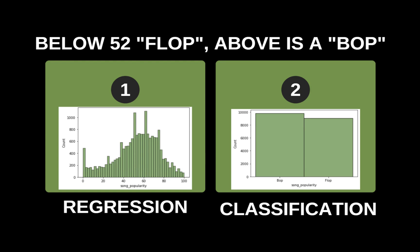So I decided to reframe the problem in a way that addresses the business problem and still provides value. Songs with a score of 52 and above are classified as a success, and lower scores were flops. 52 was strategically chosen because it gave a 50-50 class balance, which improves model performance.